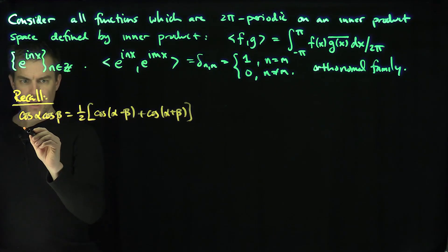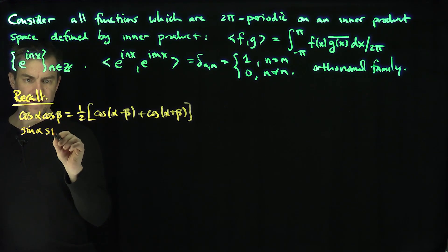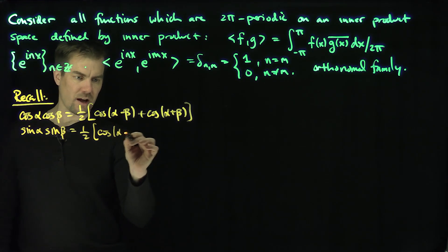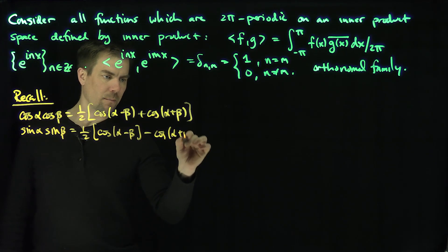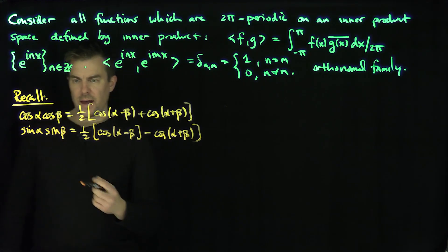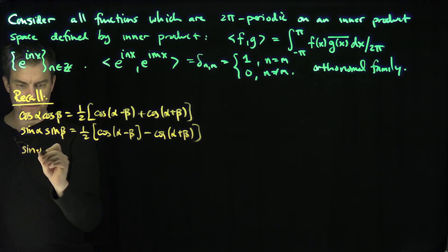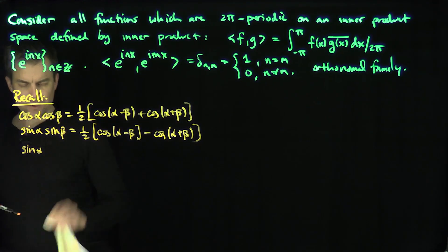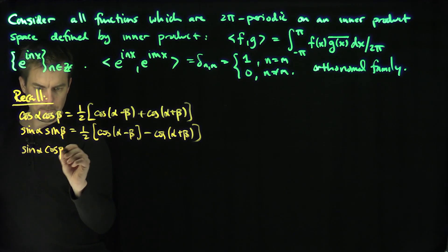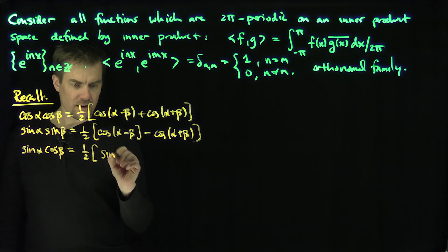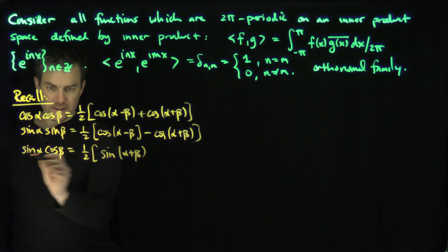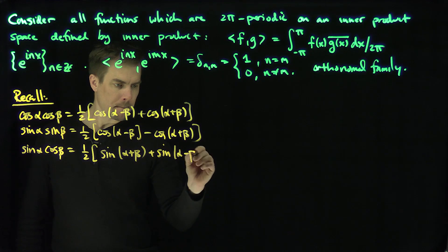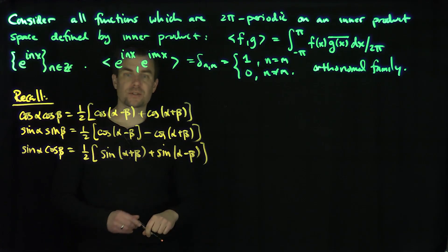That's one of the product-to-sum formulas. Similarly, sine(α)sine(β) equals one-half of cosine(α − β) minus cosine(α + β), because those both come from the cosine addition formulas. And then the mixed term, sine(α)cosine(β), equals one-half of sine(α + β) plus sine(α − β).